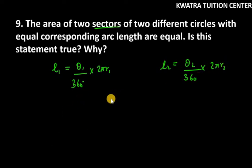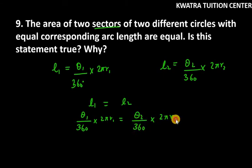Now we know that L₁ is equal to L₂. So let's see what we can get from this equation. L₁ is θ₁/360 × 2πr₁ and L₂ will be θ₂/360 × 2πr₂.